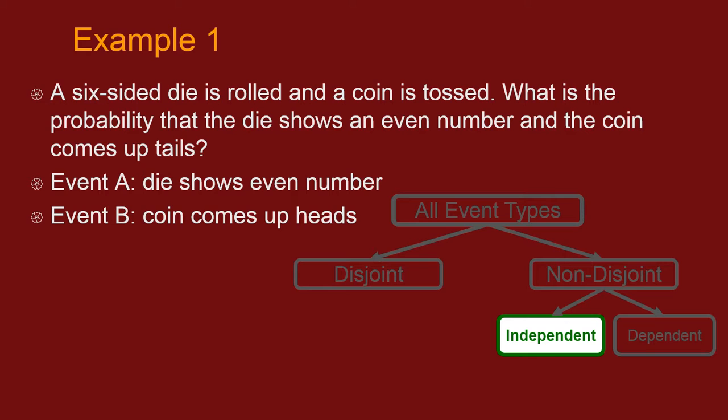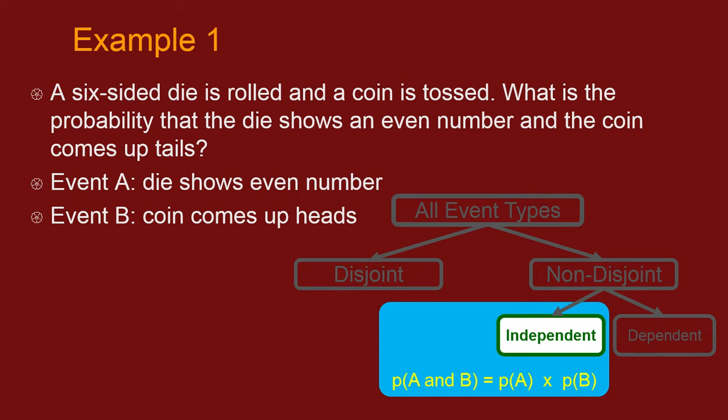Are they independent? Yes, they are. Because the probability of the die doing a certain thing does not depend in any way on what happens with the coin or vice versa. So we can use the simplified special case multiplication rule that we're going to use in this class. So that works.